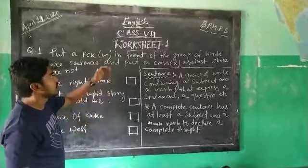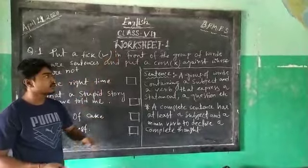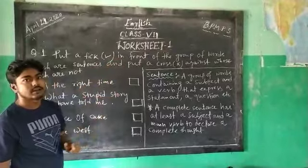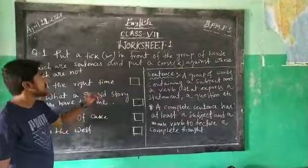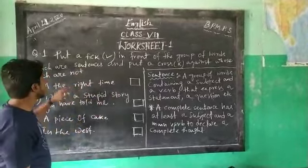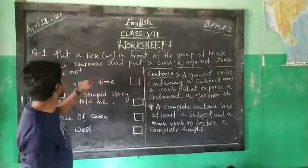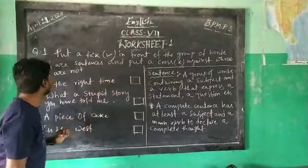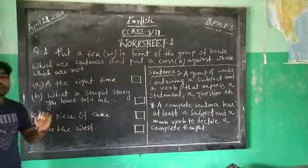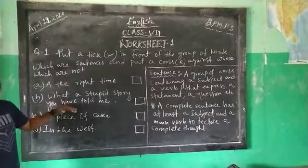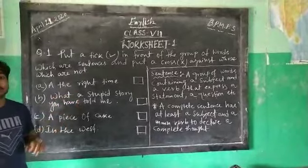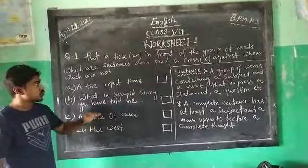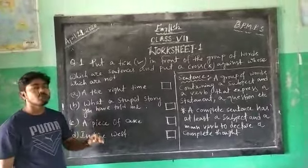Good morning students. This is for Class 7. As you got the worksheet, this is the submission of worksheet number 1 and it's absolutely English. Your first question: put a tick in front of the group of words which are sentences, and put a cross against those which are not. So what you have to do — you have to choose which groups of words are correct sentences, and those which are not sentences, you have to cross them.